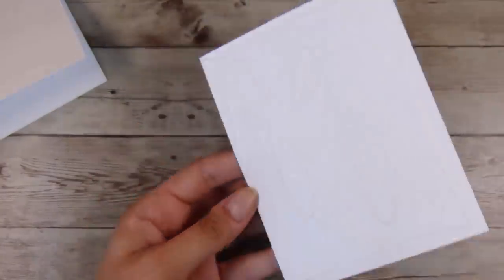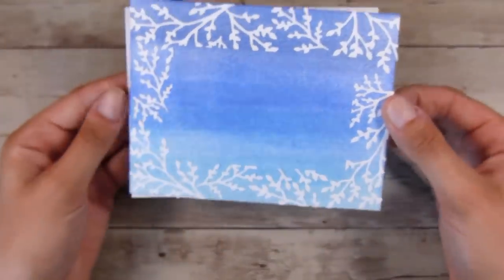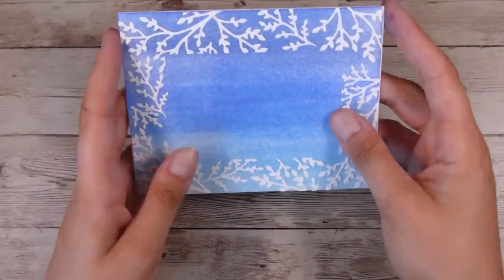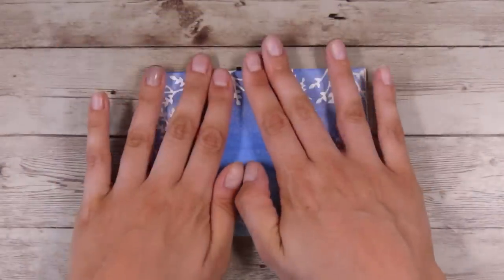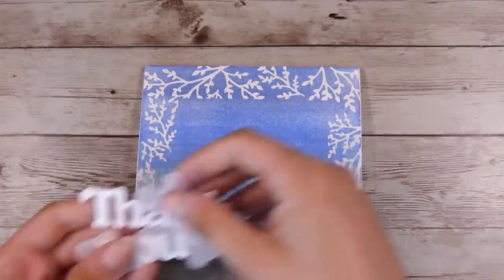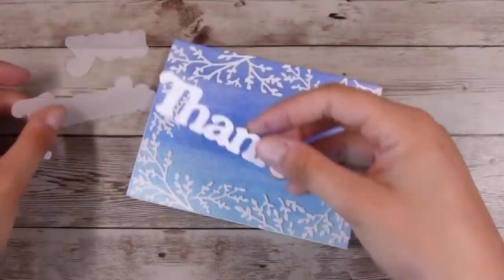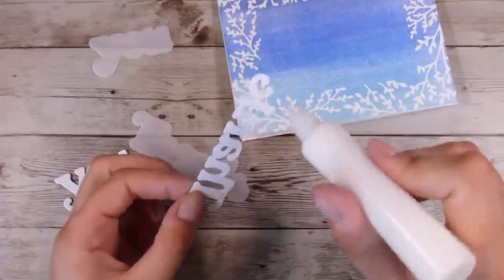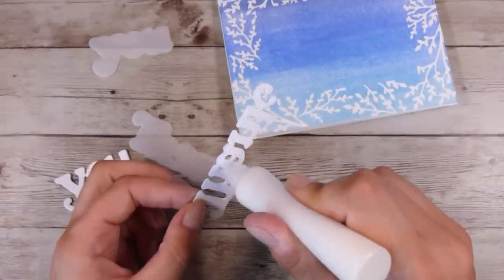I'm going to add some of the liquid glue and add it onto a 4.25 by 5.5 inch, 110-pound Neenah Solar White card base. Then all I have to do is add my sentiment in, which I created earlier.